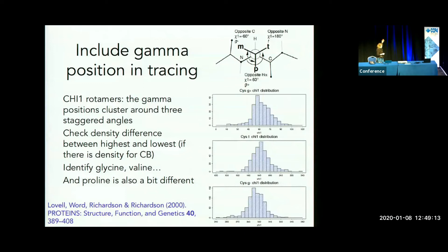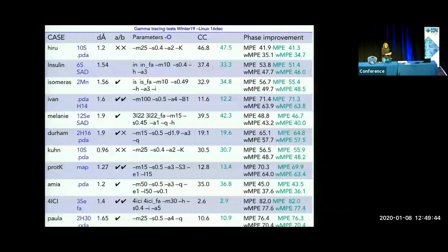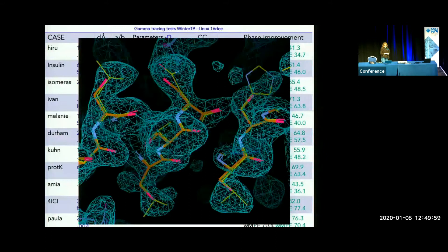Probing the gamma position is straightforward because it should be in one of three places. One can rely on discrimination between the best and worst density you get, and only introduce it in that case. This is from Jane Richardson's lab, and most of the structural criteria I've been looking into are from there. Even if I gain very little in the first cycle, I don't want to damage things by introducing the gamma position incorrectly. In all cases, it's getting slightly better when you start putting gamma atoms into the extending density.